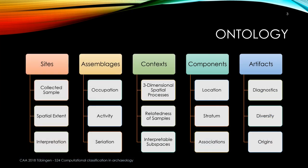Just a general overview of ontology: we have sites — bounded areas of deposition that have a spatial extent and are ultimately our object of interpretation. Within that, we often have multiple assemblages even when it's a single occupation site. So by assemblage, we have multiple activity areas.